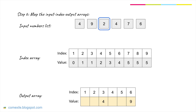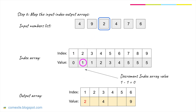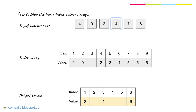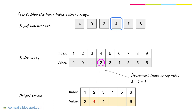Let's move on to the next element, 2. Find index 2 in the index array — the value is 1. Find index 1 in the output array and fill in the value. Again, we need to decrement the index array value. Moving to the next element, 4. The value of the index array is 2. Find index 2 in the output array and fill in the value. Here you would notice the importance of decrementing the index array value — if it had not been decremented before, we would still get 3, which is already filled in the output array. Again, we need to decrement the index array value.